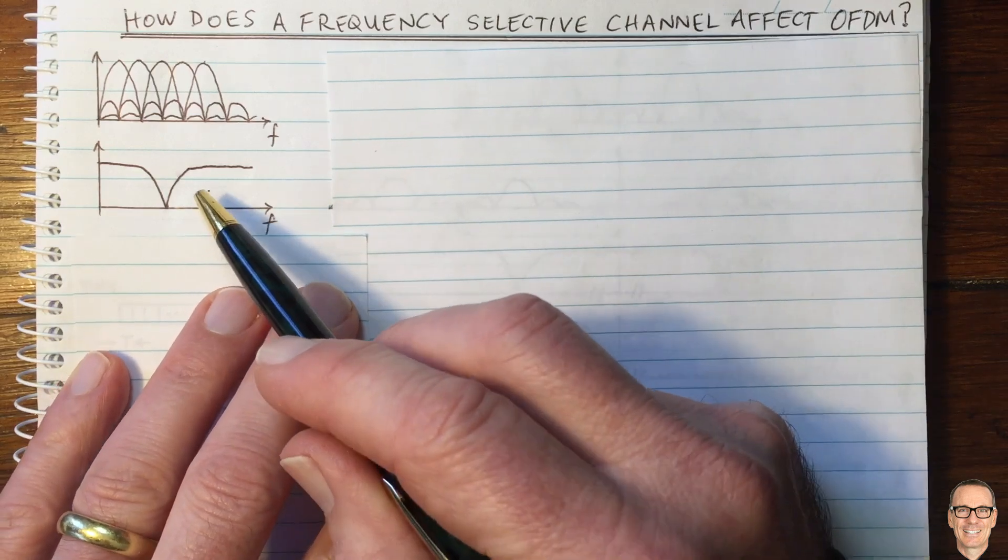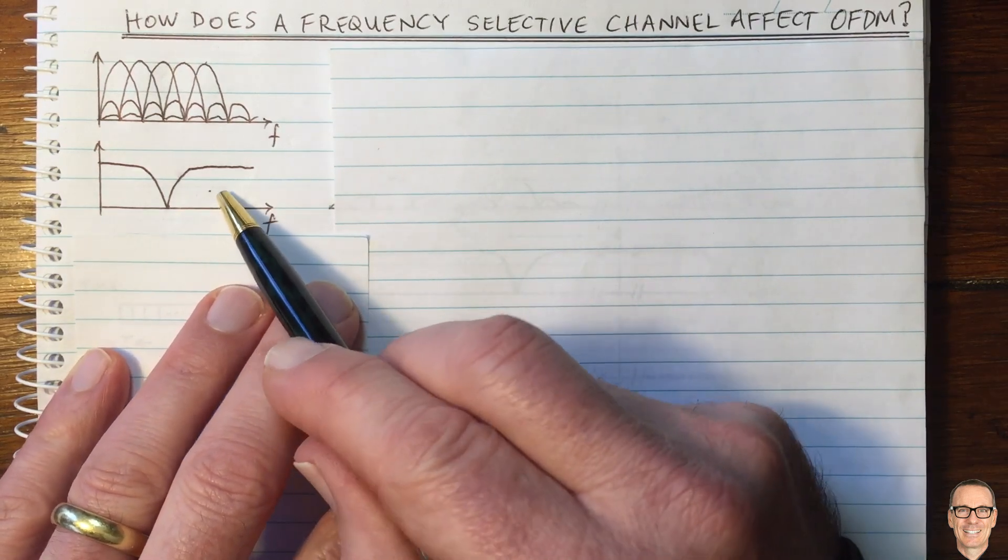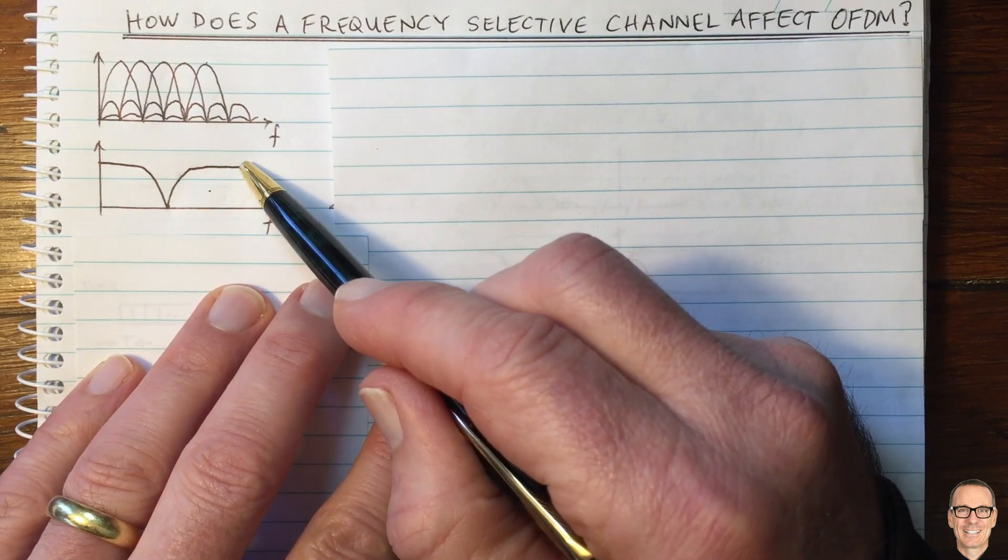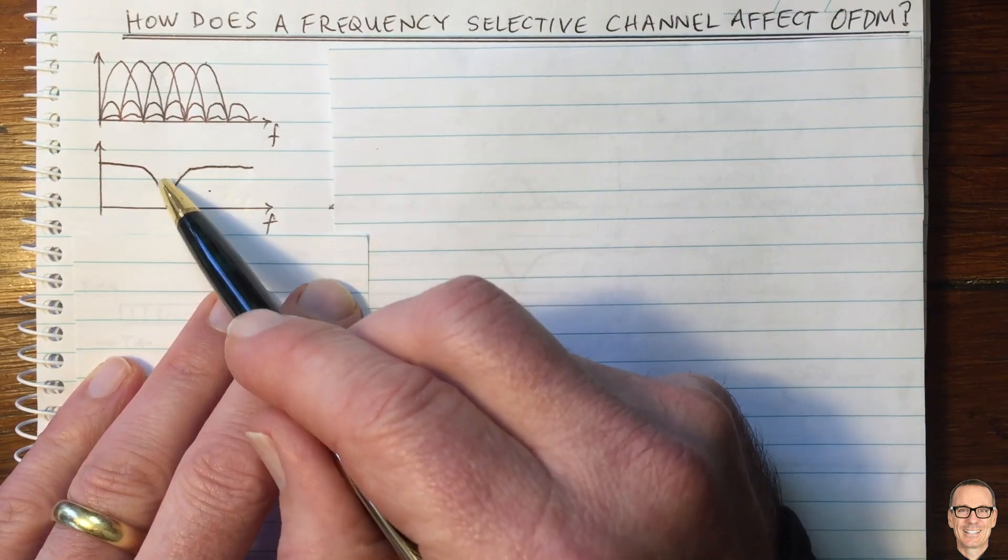And here we've got the standard picture of a frequency selective channel showing that some portion of the channel will be propagated with full strength and some will be notched out.